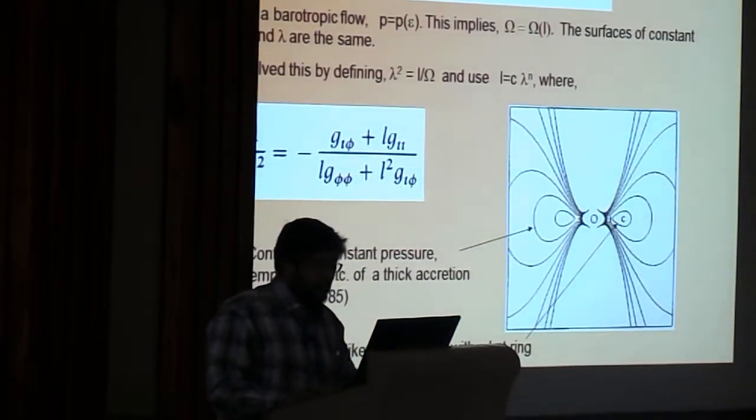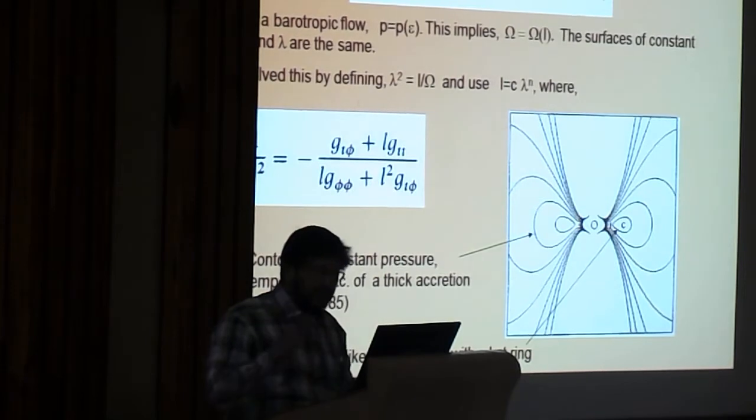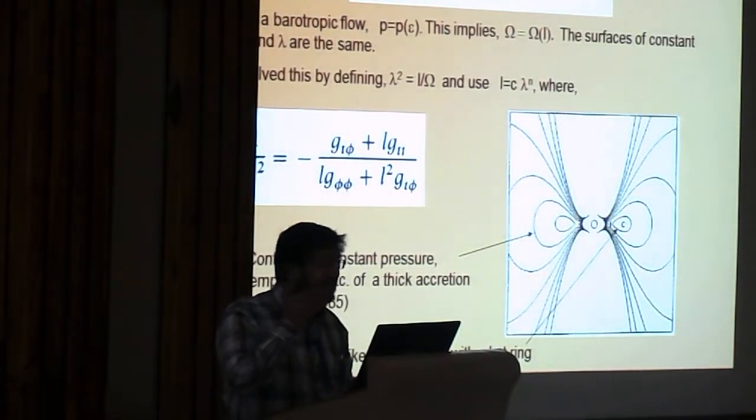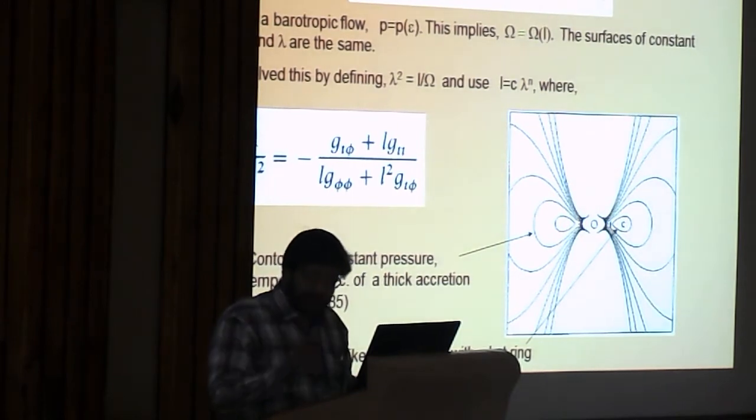And of course, we wrote a paper there, how to study them properly in general relativity. This is Schwarzschild and the Kerr geometry actually, in 1985.